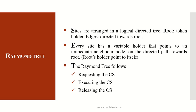The Raymond Tree follows three major steps: requesting the CS (critical state), executing the CS, and releasing the CS.